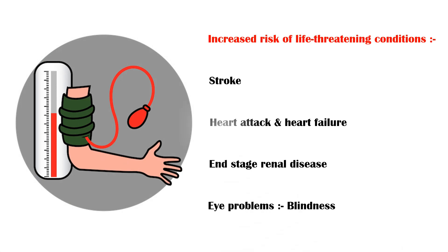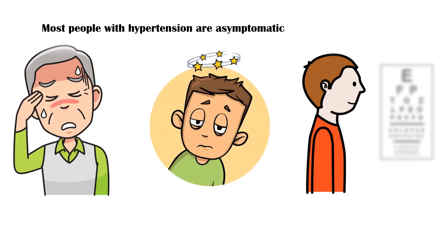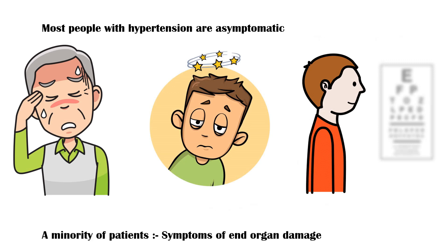Most people with hypertension are asymptomatic and usually found on routine screening programs or incidentally. If present, some common symptoms include headache, dizziness, and visual disturbances. A minority of patients can have symptoms of end-organ damage, such as heart failure, heart attacks, stroke, kidney failure, peripheral vascular disease, and eye complications.